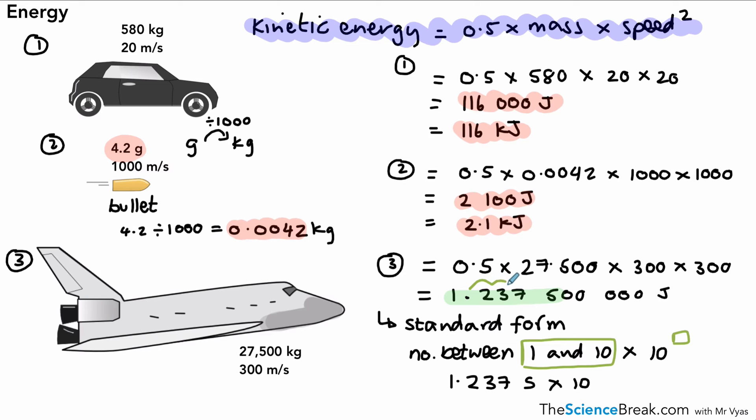So in this case, the answer is 1.2375 times 10 to the 9 joules. And that's our final answer for the energy of that space shuttle. Okay, so three examples with some manipulations you have to do with numbers.